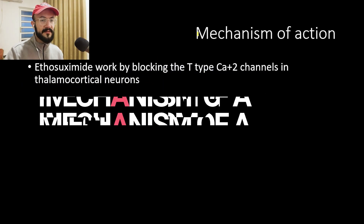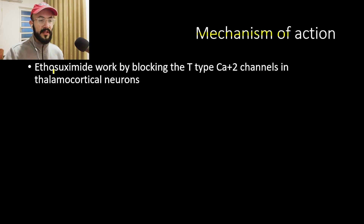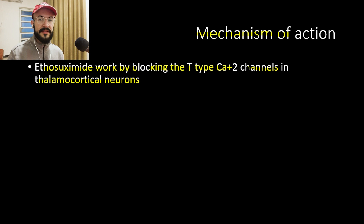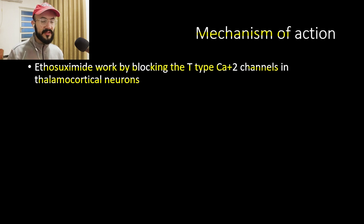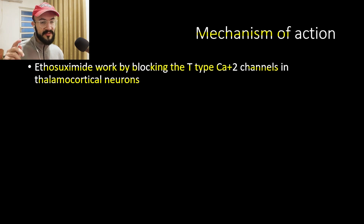Now let's talk about the mechanism of action. Ethosuximide works by blocking T-type calcium channels in the thalamocortical neurons. Previously in the CNS Pharmacology Masterclass, we discussed the pathophysiology of absence seizures, where T-type calcium channels are dysfunctional. Ethosuximide acts on these channels to block them and treat this type of seizure.